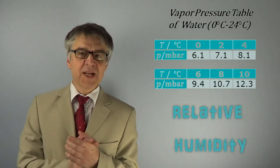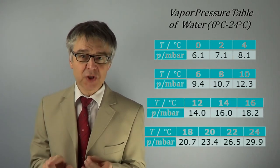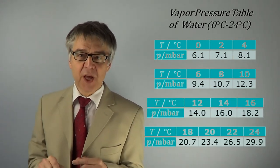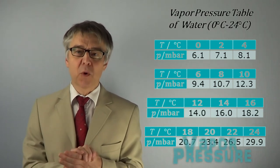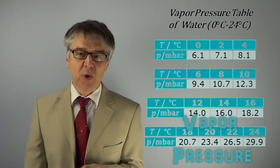The degree of saturation of the moist air we can calculate by dividing the partial pressure by the vapor pressure. Here we see a vapor pressure table of water, which you can calculate, for example, with Antoine's equation.